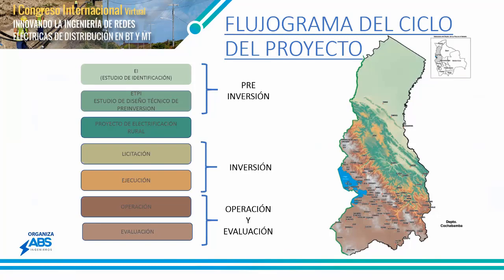Cuando ya tenemos el proyecto y la licencia, lo que hacemos es buscar financiamiento. Generalmente en el departamento de La Paz, y en muchos departamentos de Bolivia, se busca cofinanciamiento — por ejemplo, el gobierno pone el 70% y el municipio pone el 30%. Una vez tengamos el financiamiento, se realiza la ejecución, basada en licitaciones según quien tenga la mejor propuesta tanto económica como técnicamente. Después de la ejecución, entramos a la operación — una vez teniendo el operador del área de concesión, le damos un contrato de operación y mantenimiento para que puedan operar y hacer mantenimiento a la red.